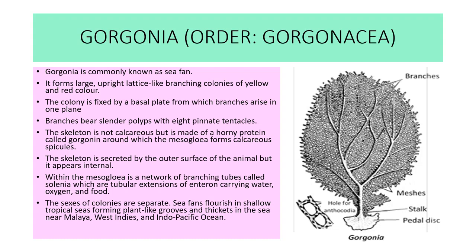Next example is Gorgonia. It belongs to order Gorgonacea. Gorgonia is commonly known as sea fan. It forms large upright, lattice-like branching colonies of yellow or red color. The colony is fixed by a basal plate from which branches arise in one plane. The branches bear cylindrical polyps with eight pinnate tentacles. The skeleton is not calcareous but is made up of a horny protein called gorgonin, around which the mesoglia forms calcareous spicules. The skeleton is secreted by the outer surface of the animal but appears internal. Within the mesoglia is a network of branching tubes called solenia — tubular extensions carrying water, oxygen, and food. The sexes in the colony are separate. Sea fans flourish in shallow tropical seas forming giant plant-like groups.